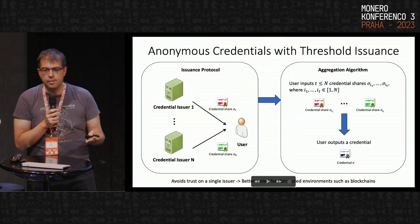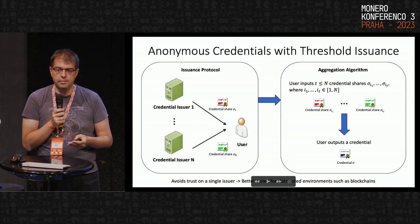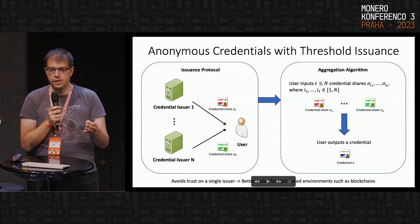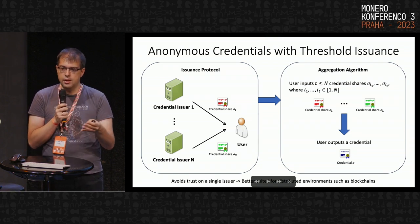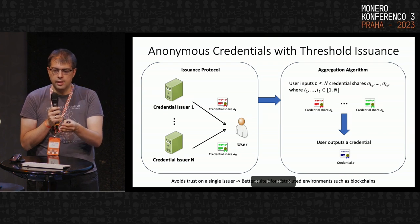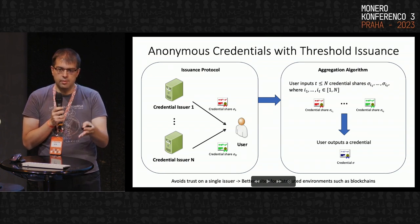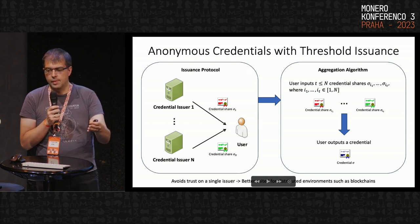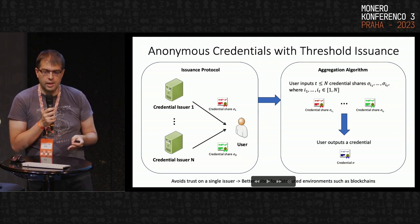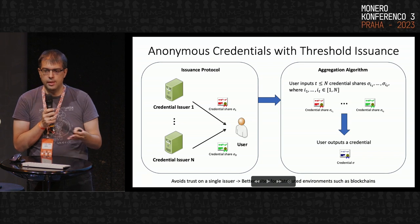Most anonymous credential schemes have been proposed in the last two decades. Up until recently, all schemes considered one credential issuer, which is trusted to provide a correct certification of your attributes. This creates a single point of trust: if the credential issuer is corrupt, it can provide fake credentials to users. In NIM we want to avoid this. Recently, some anonymous credential schemes have been proposed that provide threshold issuance.